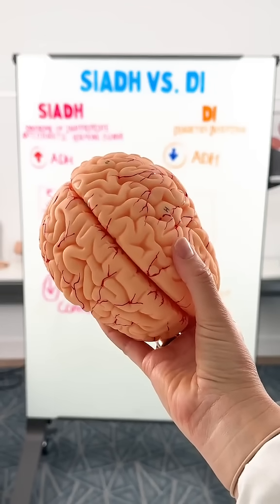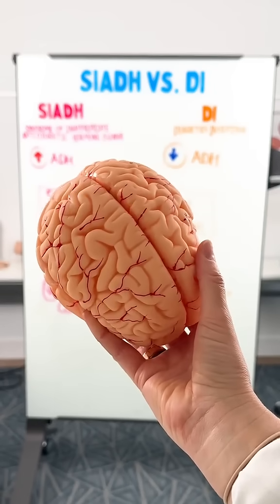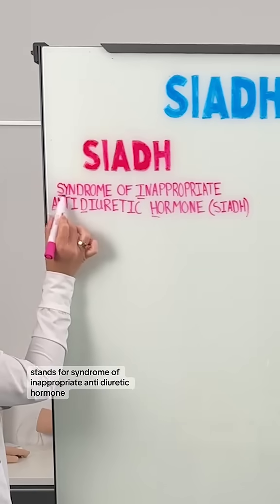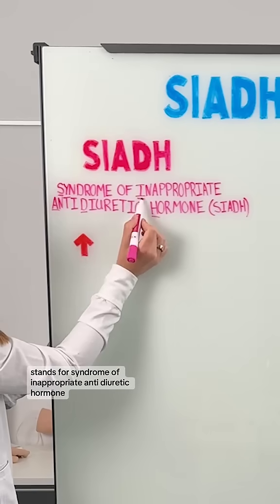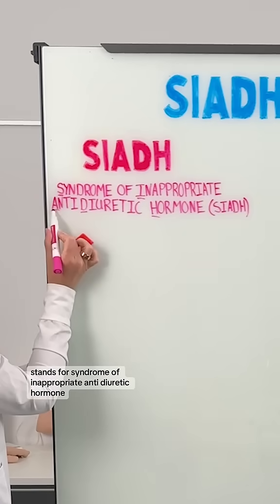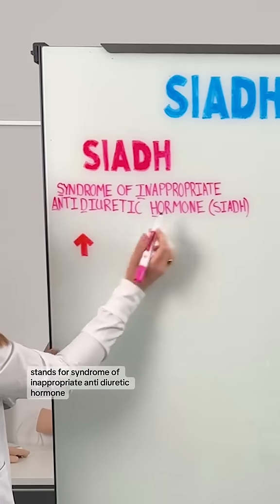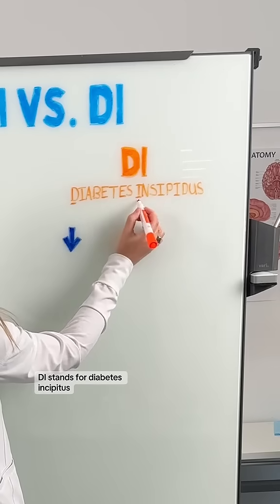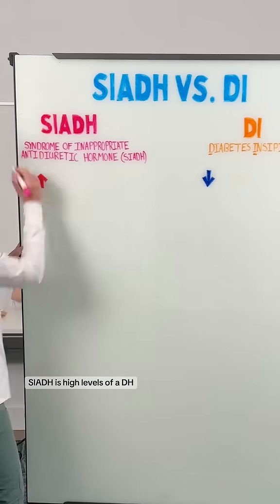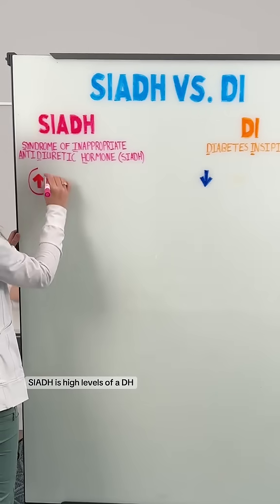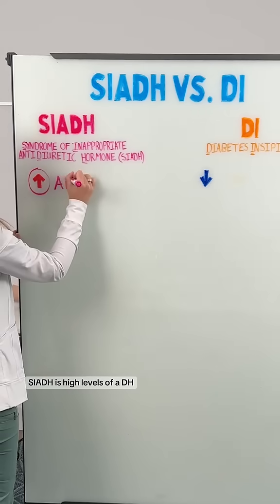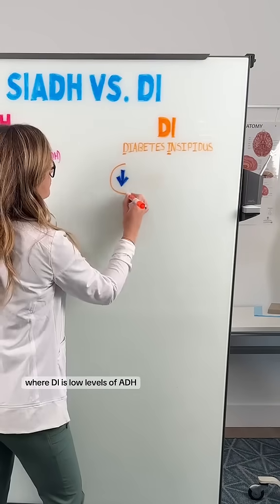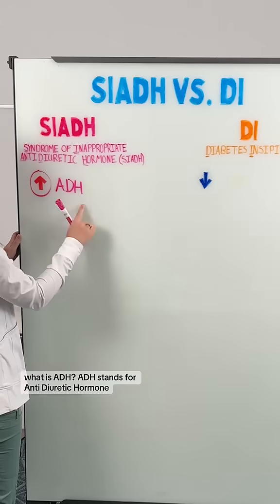Let's talk about SIADH versus DI. SIADH stands for syndrome of inappropriate anti-diuretic hormone. DI stands for diabetes insipidus. SIADH is high levels of ADH, where DI is low levels of ADH.